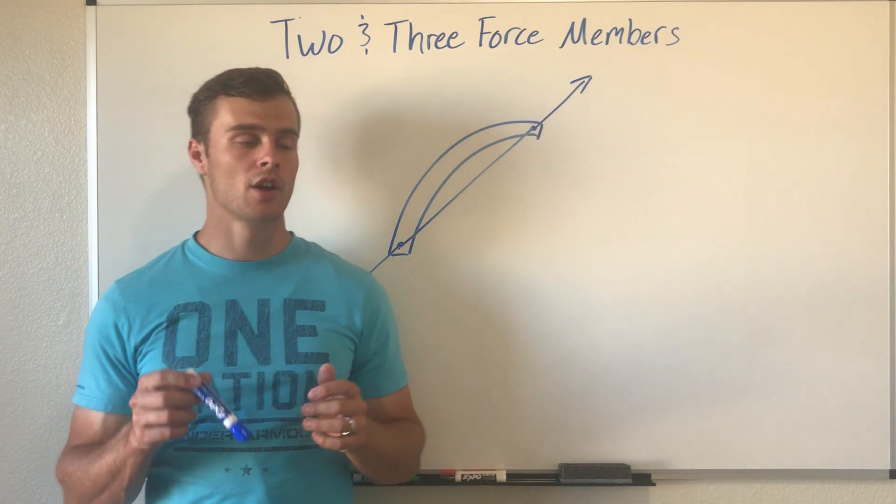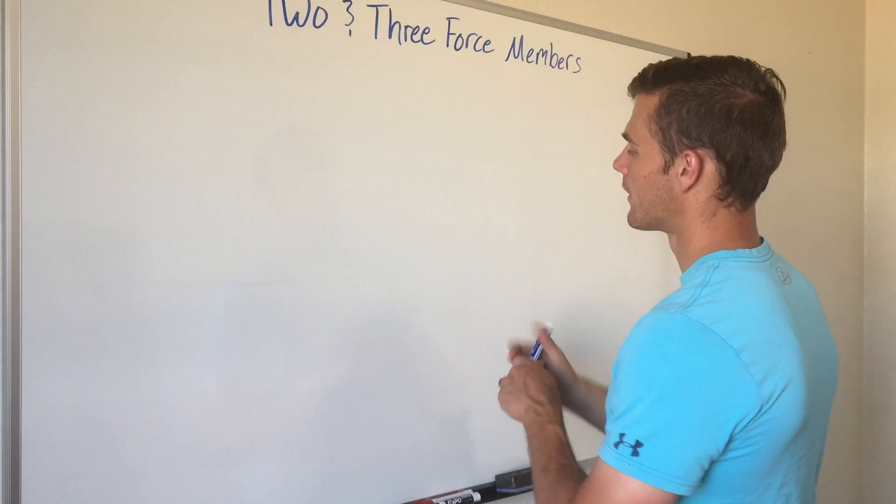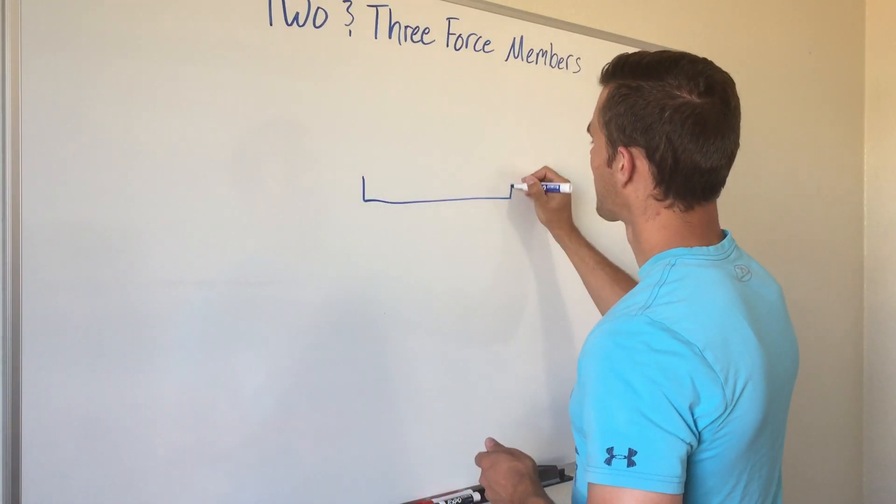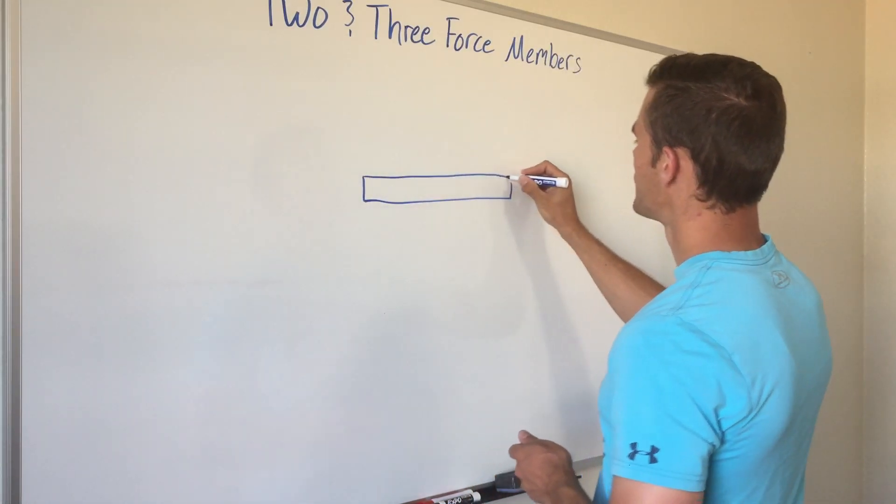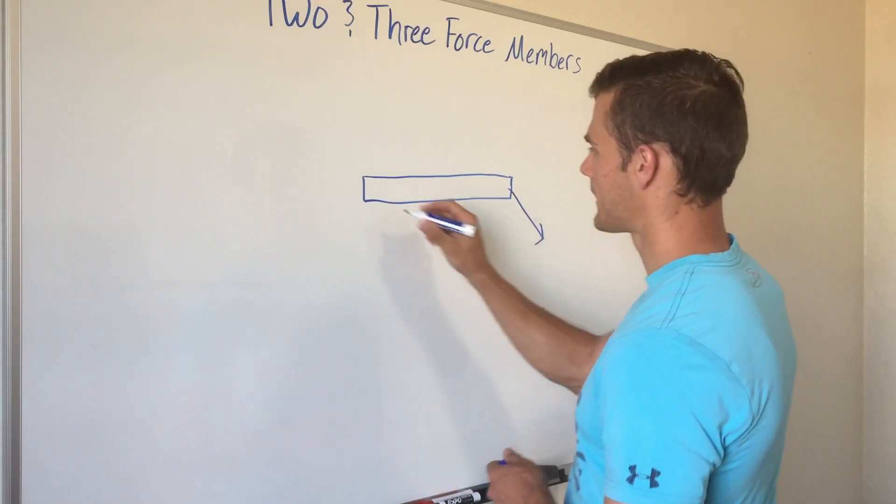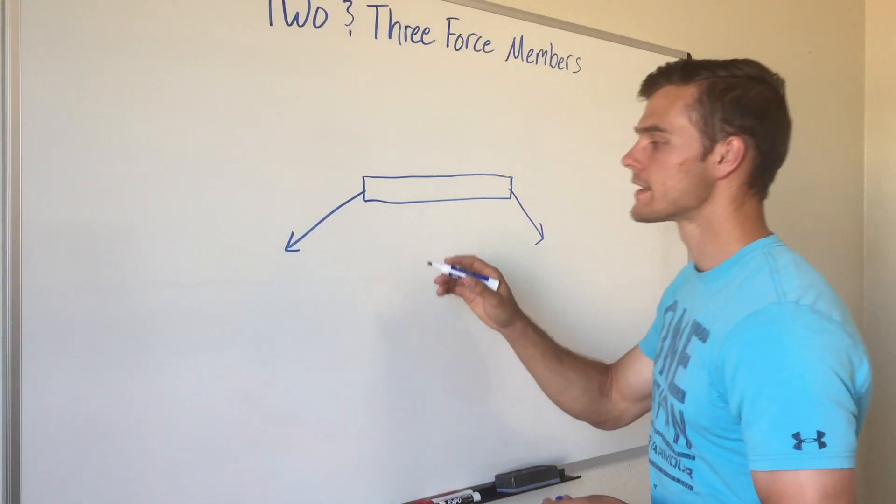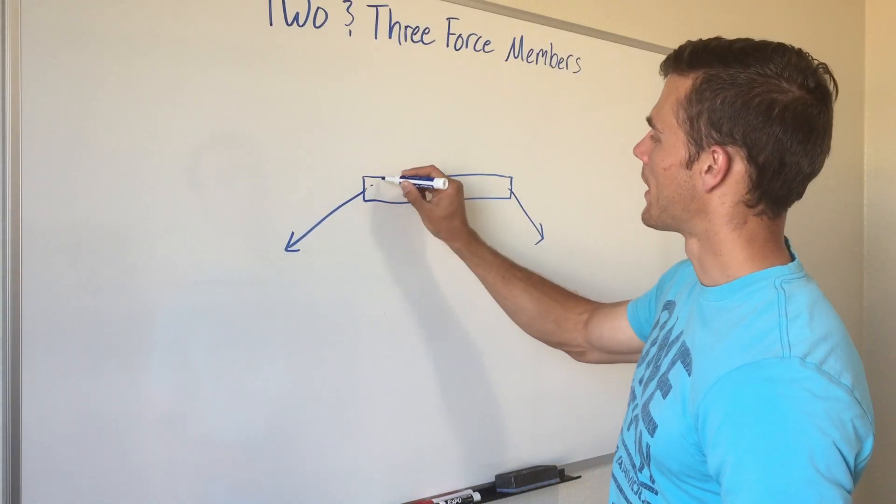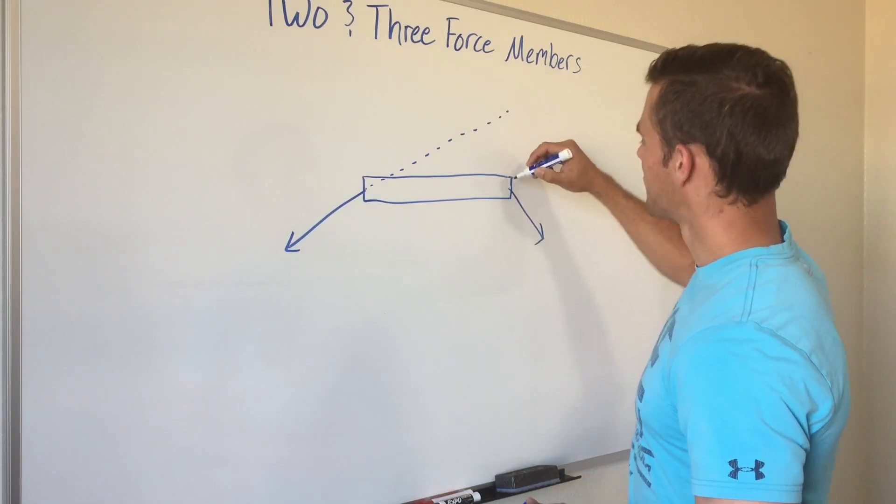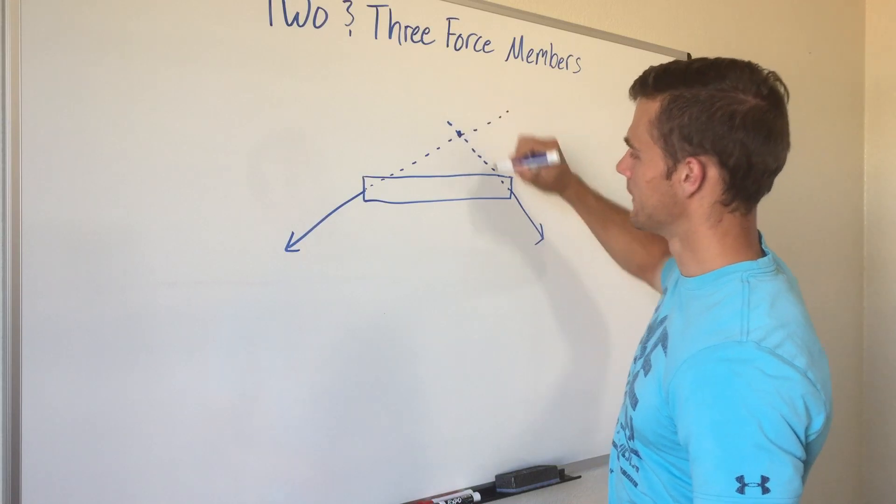What that means is a parallel system is that all three forces are parallel to each other. And a concurrent system looks something like this. If we have a beam here, and we have two forces pulling on both ends, something like maybe that, and something like that, well, their lines of action would come off something like that, and this one would be like that. So they'd intersect about right there.